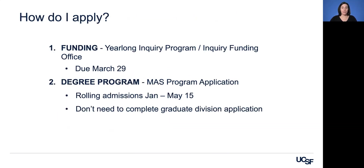How do you apply? There are two applications you need to be aware of. First, for funding: the year-long inquiry program through the inquiry funding office, typically due at the end of March — this is a competitive application. Second, the application for the MAS program itself. We have rolling admissions and will accept applicants any time before May 15th. Since you are already UCSF students, you don't need to complete quite as much paperwork and do not have to complete the graduate division application.